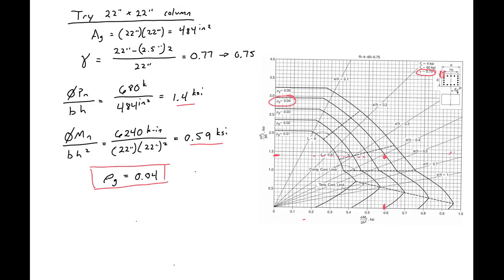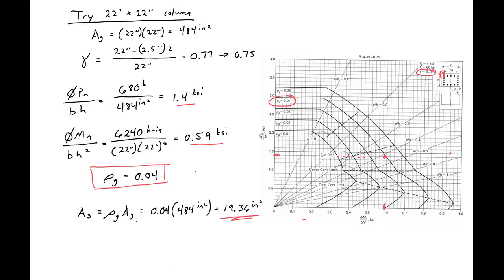We can figure out the required area of steel: As equals ρg times Ag, so 0.04 times 484 square inches gives us a required steel area of 19.36 square inches. This is the area of steel we need to provide in our column to resist our axial load and moment combination.